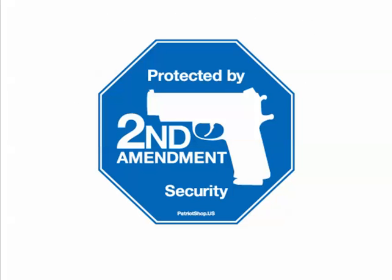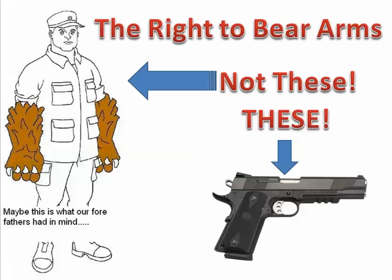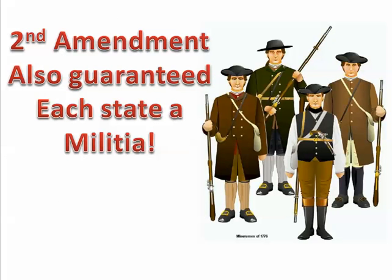The Second Amendment is the right to bear arms — the right to have guns. It's very controversial today. It also means the right to have a militia or a standing army in the states. Some people argue it was meant to really guarantee that states had a militia, not necessarily that individuals could have firearms. But that's the second one.